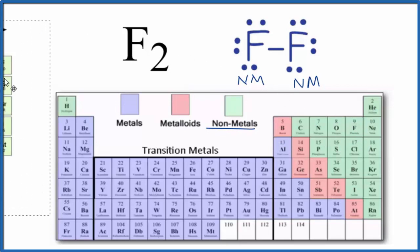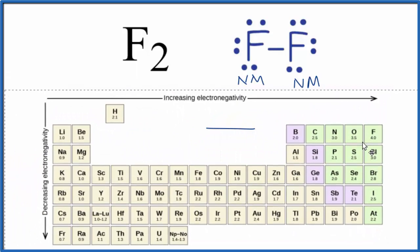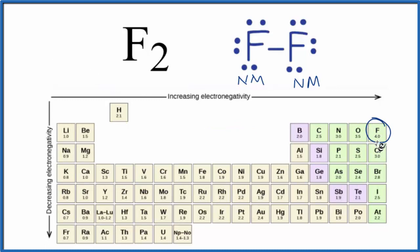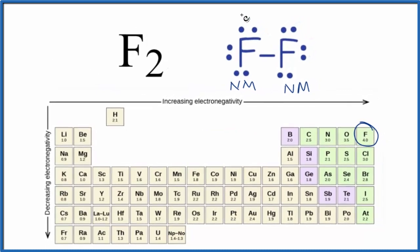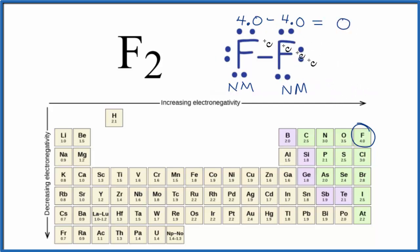We could also look at the difference in electronegativity between the two atoms to figure out whether we have an ionic or covalent compound. Fluorine has an electronegativity value of 4.0. Since they're the same element, each one is 4.0. The difference is 4.0 minus 4.0, which is zero — so there's no difference in electronegativity between the two fluorine atoms.